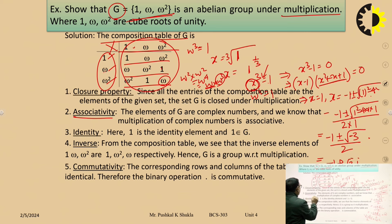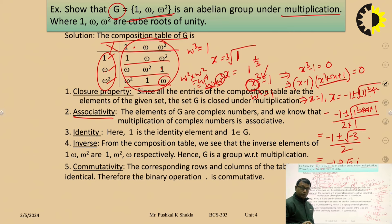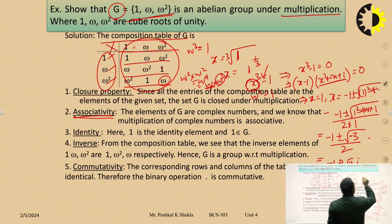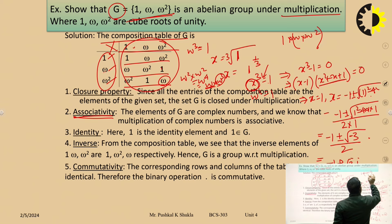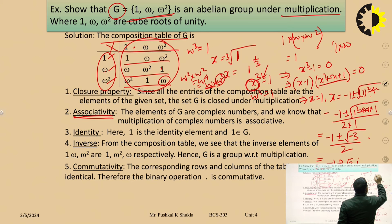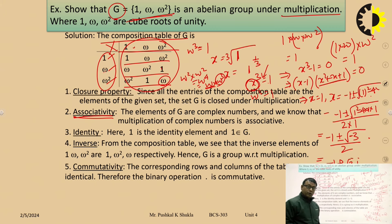Associative property: the elements of G are complex numbers 1, ω, ω², and multiplication of complex numbers is always associative. We can also show this by example: (1·ω)·ω² = ω·ω² = ω³ = 1, and 1·(ω·ω²) = 1·ω³ = 1. Both give the same result, confirming the associative property.